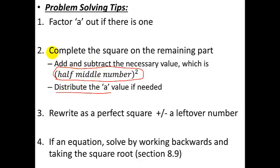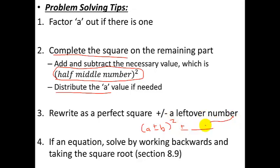I know this looks a little abstract — please just copy it down, and when we do the examples it'll all make sense. At the end of step 2, you've completed the square and have a perfect square trinomial. You rewrite it as a perfect square binomial, and any number left over at the back stays as that number outside the expression. If it's an equation rather than an expression, once you have it in this form you can easily solve by working backwards to isolate the variable.